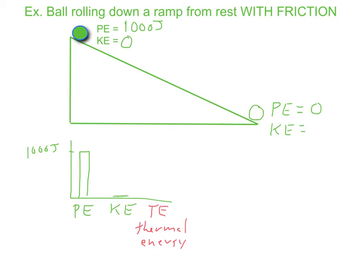And kinetic energy zero, thermal energy zero, because it hasn't started moving yet. But once it's moving, by the time it gets to the bottom, our graph would look something like this. We can still make spots for PE, KE, and TE. Potential energy is going to be zero since now it's at the bottom.